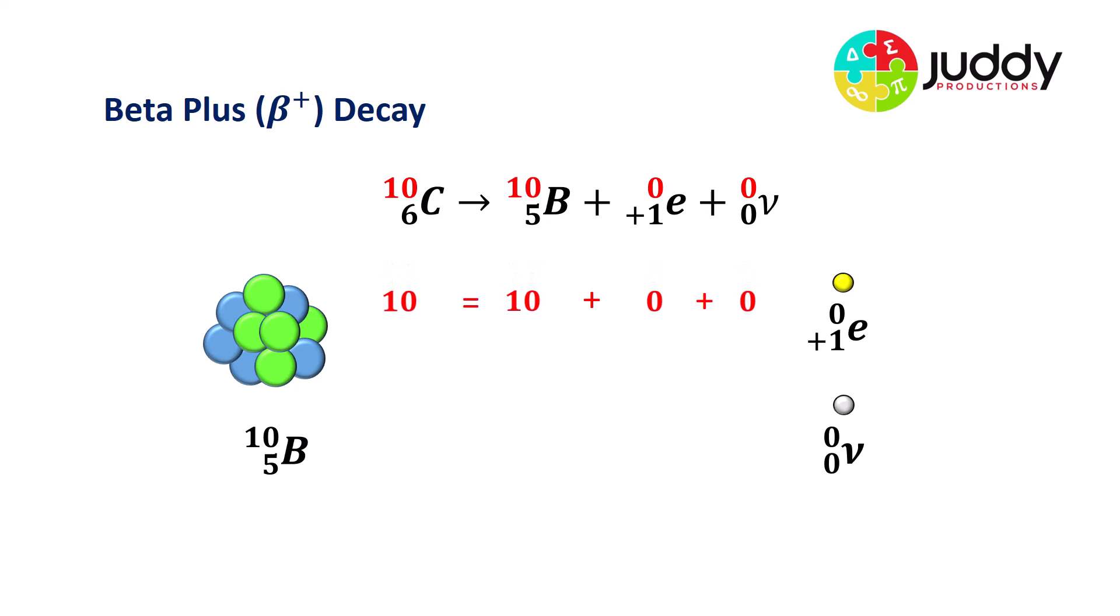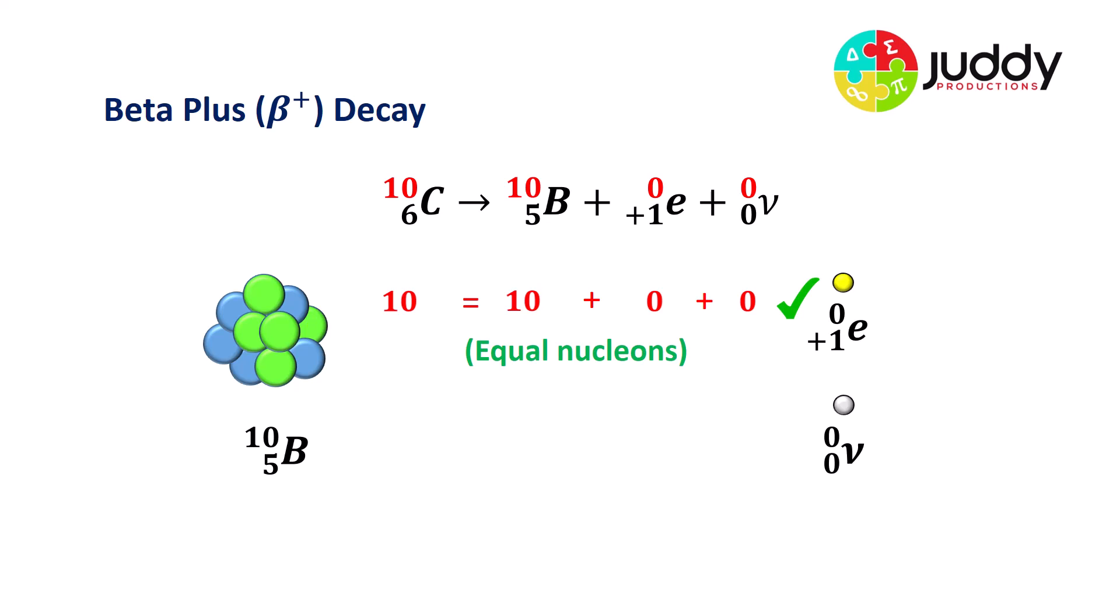Likewise, there's a conservation of the mass number. We have 10 for the mass number, for the carbon 10 nuclei. And after it decays, we have 10 for the mass number of the boron nuclei. No mass numbers for the positron or the neutrino. We have equal number of nucleons. Let's look at the big picture of what's happening during this decay.